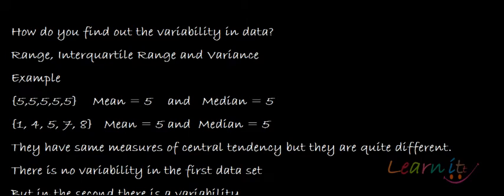How do you find out the variability in data? Up until now we have just seen certain summary statistics. What is mean? What is median? What is mode? What are quartiles? You've just seen them.